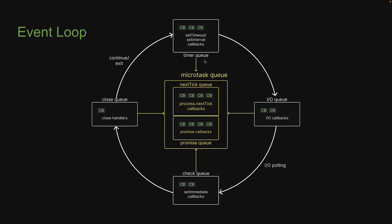First, we have the timer queue. This contains callbacks associated with setTimeout and setInterval. Second, we have the IO queue. This contains callbacks associated with all the async methods we have seen so far — for example, methods associated with the fs and http modules. Third, we have the check queue. This contains the callbacks associated with a function called setImmediate, which is specific to Node and not something you would come across when writing JavaScript for the browser.